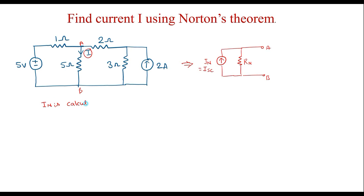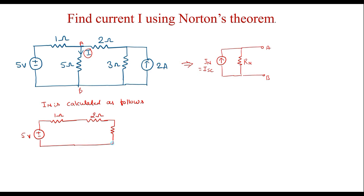In is calculated as follows. I will draw the equivalent circuit. There is a 1 ohm resistor, a 5 volt voltage source, a 2 ohm resistor, and a 3 ohm resistor in parallel with a 2 amp current source. This is terminal A and terminal B. We remove the 5 ohm resistor so A and B become open, then we short A and B. The current through this shorted path is known as In.